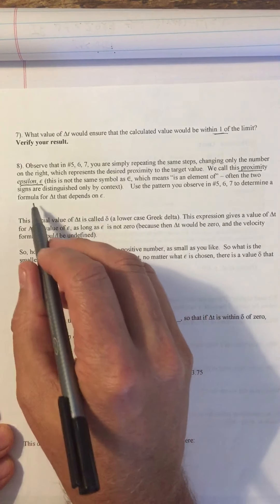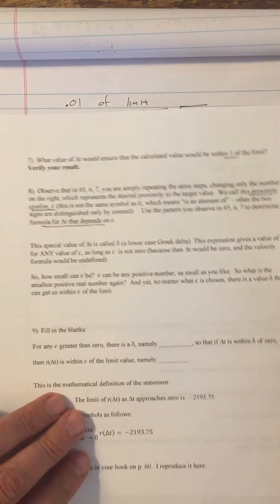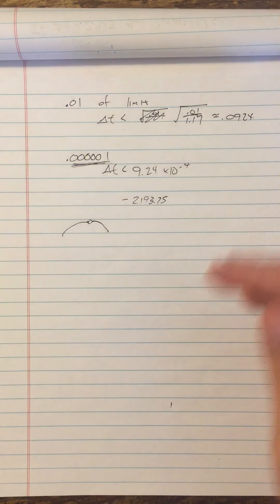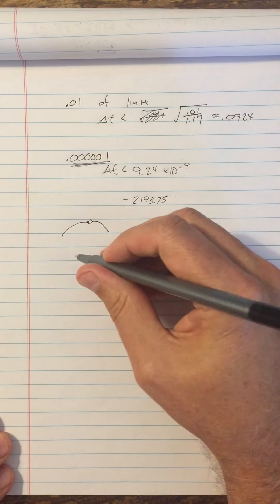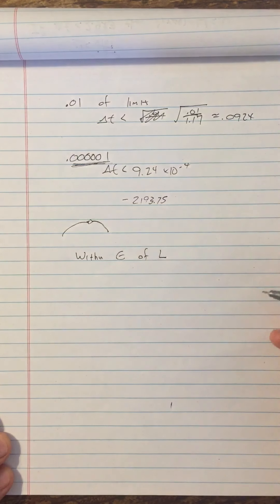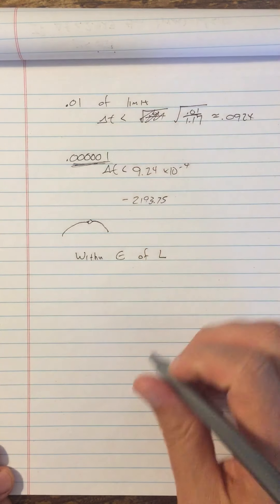All right. Determine a formula. So now what we're going to do, instead of finding smaller and smaller values of delta T, let's get a formula for delta T that depends crucially on epsilon. So what is it? Have you determined what the formula is? If you've not paused, take a look at our pattern here and see if we can say, if I wanted to be within any epsilon of L, what value of delta T would I use?